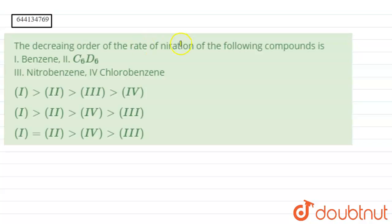Hello students, in the given question we have been asked the decreasing rate of nitration for the following compounds. There is one correction - this is nitration. Four compounds are provided to us and we have to choose the decreasing rate for nitration.